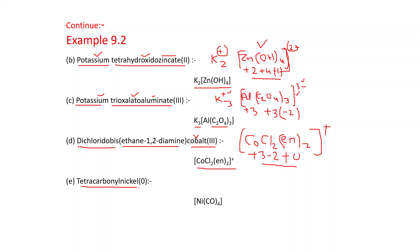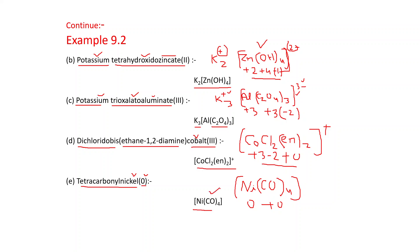Next: tetracarbonyl nickel(0). The metal is nickel (Ni). Carbonyl is CO, and tetra means 4 times. The oxidation state of nickel is 0, and carbonyl is a neutral ligand, so the net charge is 0 + 0 = 0. Since the charge is zero, there is no superscript needed. The formula is [Ni(CO)4], or simply written as Ni(CO)4.